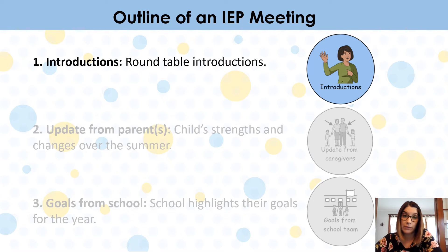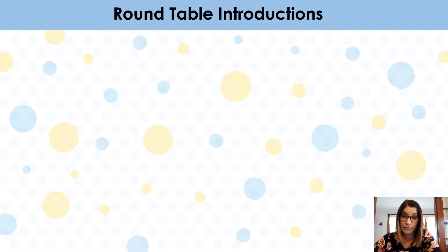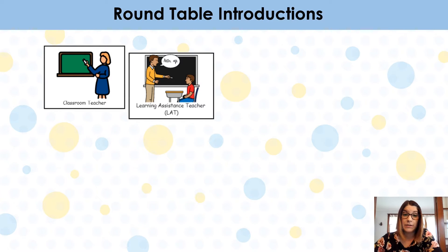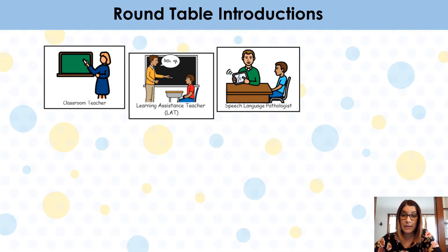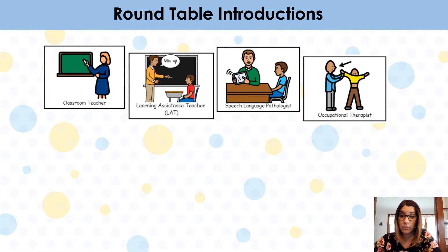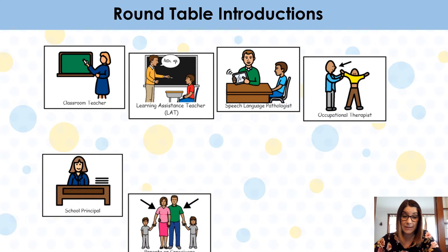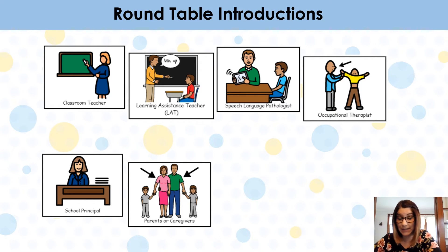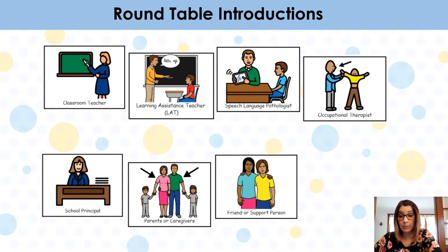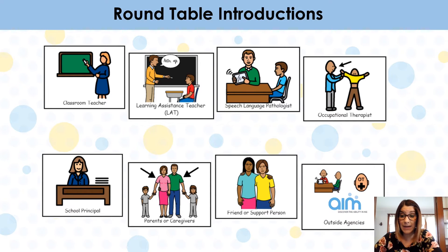What can you expect for an outline at an IEP or IIP meeting? Usually the first step is round table introductions. Typically the classroom teacher, a learning assistant teacher or LAT might attend. Maybe your school speech language pathologist or occupational therapist will attend. Sometimes the school principal or school board members might attend. Of course you attend, your spouse and other family members can attend. You are able to bring a friend or support person, and outside agencies like the AIM team or Kinsman Children's Centre can also attend.